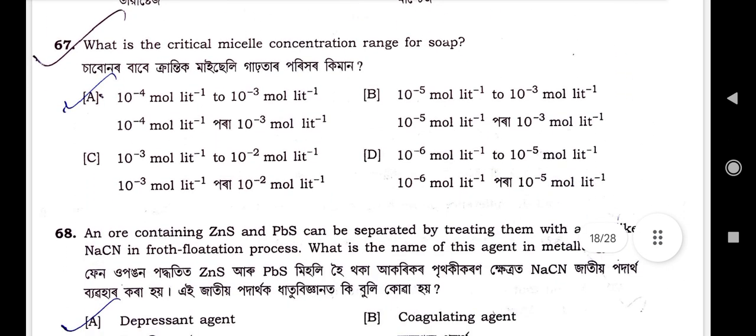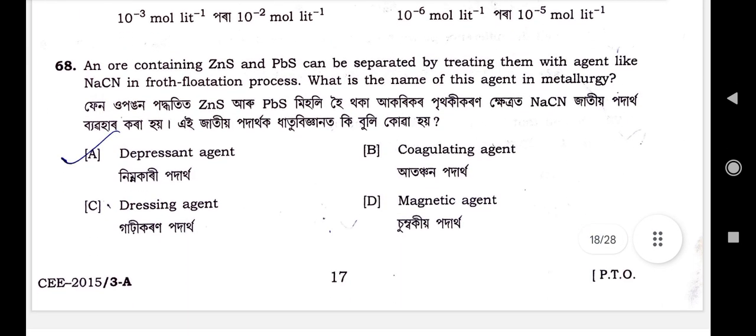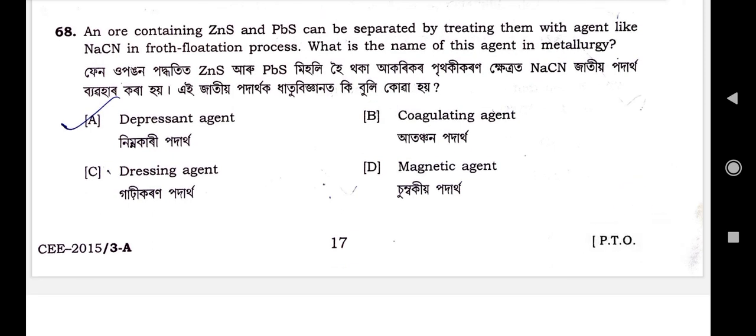Question number 67: What is the critical micelle concentration range for soap? Option A is the correct option: 10⁻⁴ mol/L to 10³ mol/L. Question number 68: An ore containing zinc sulfate and PbS can be separated by treating with sodium cyanide (CN⁻) in the froth flotation process. What is the name of this agent in metallurgy? Option A is the correct option — depression agent.